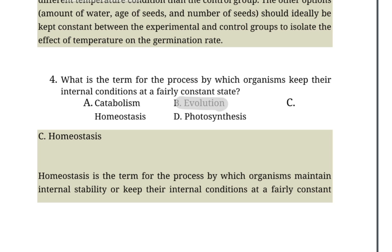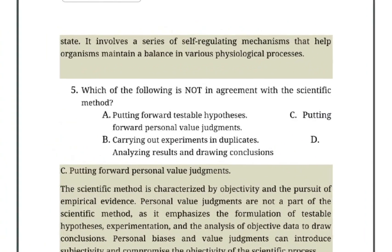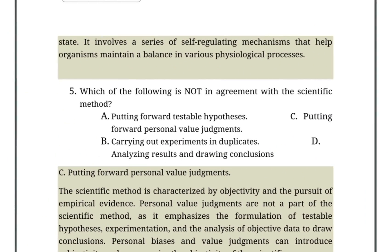What is the term for the process by which organisms maintain their internal conditions at a fairly constant state? A. Catabolism. B. Evolution. C. Homeostasis. D. Photosynthesis. The answer is homeostasis. Homeostasis is the term for the process by which organisms maintain internal stability. It involves a series of self-regulating mechanisms that help organisms maintain a balance in various physiological processes.